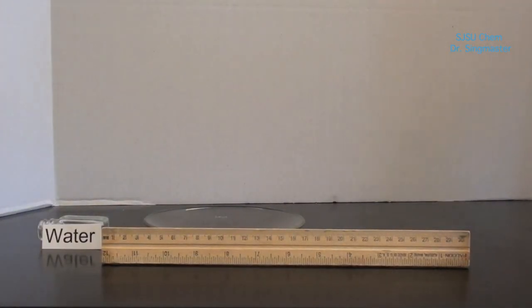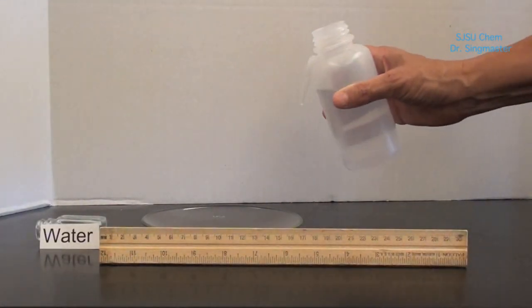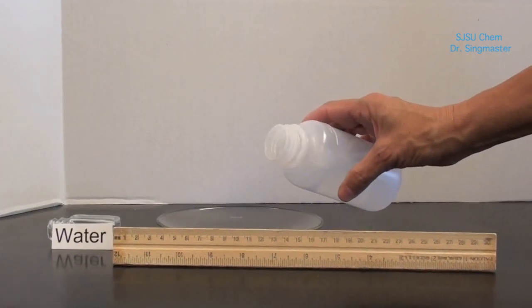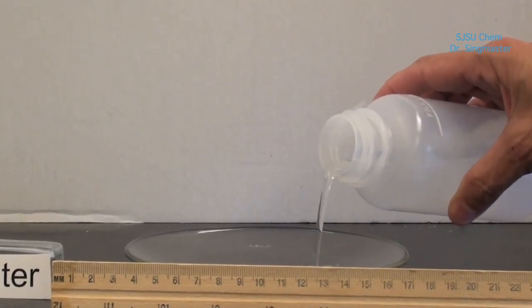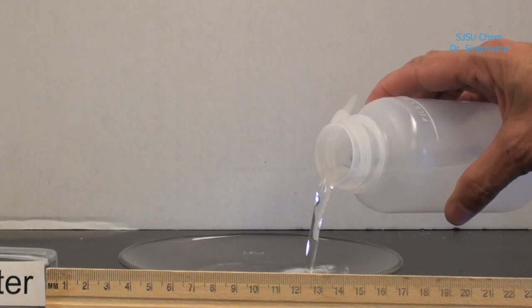Now we're going to create our layer of water where we're going to build the monolayer of stearic acid. So we're filling a watch glass with water.